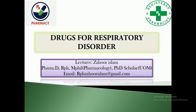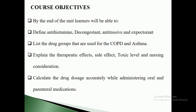Today our lecture is about drugs for respiratory disorders. What are the different types of drugs which are used in the treatment of respiratory disorders? In this chapter, we will cover the core subject objectives: define antihistamines, decongestants, anti-tussives, and expectorants; the drug groups used for COPD (chronic obstructive pulmonary disease) and asthma; explain the therapeutic effect, side effects, toxic level, and nursing considerations; and calculate drug usage accurately while administering oral and parenteral medications.